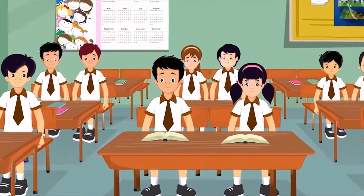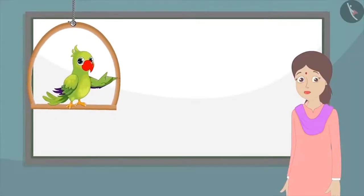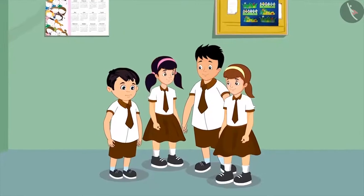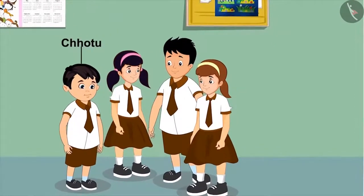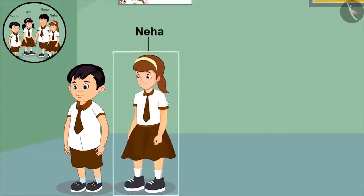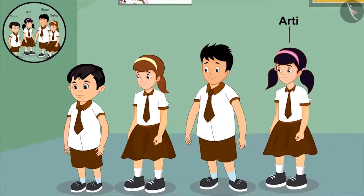Today, Chotu's class is going for a picnic and Chotu's teacher asks all the children to stand in groups of four. She asks the four children to stand in a line in small to large order based on their height. Chotu and his three friends — Aarti, Neha, and Sonu — begin to stand in a line. Being the shortest among the four, Chotu stands in front. Neha, who is taller than him but shorter than the rest, stands behind him. Sonu stands behind Neha, and finally, Aarti stands behind Sonu.